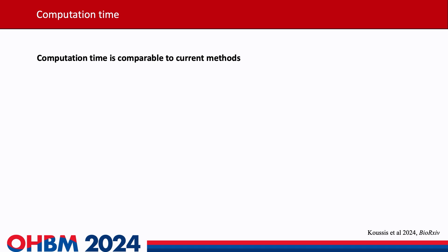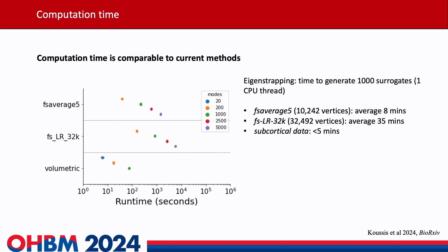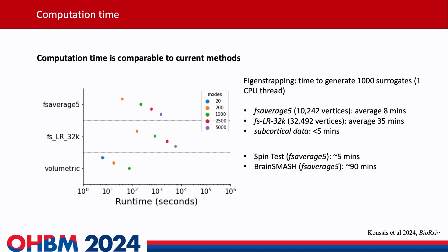So how long does it take? It's worth pointing out how long these things take. To generate 1,000 surrogates — a good starting point for deriving a null distribution — with one CPU thread, eigenstrapping takes about eight minutes for the FS average 5 surface with 10,000 vertices, and about 35 minutes with the FS LR 32k surface. In subcortical data it often takes less than five minutes, very often about a minute. Comparably, the spin test on FS average 5 takes about five minutes and brain smash takes about 90 minutes — so we're comparable to other methods, better in some ways.